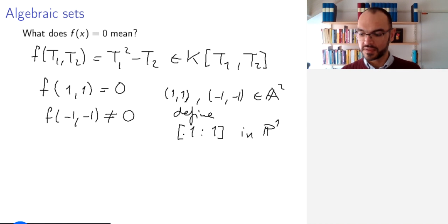To make things well defined, we therefore have to exclude polynomials that don't behave well with this condition that things are only defined up to a scalar multiple.